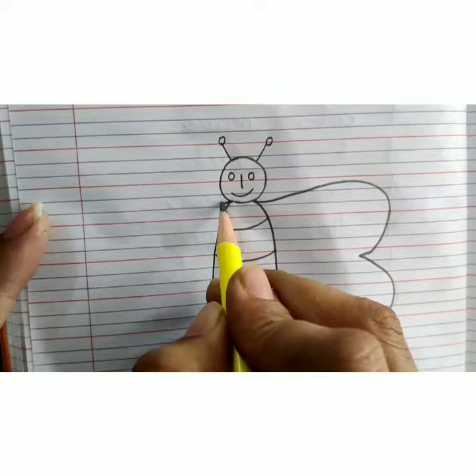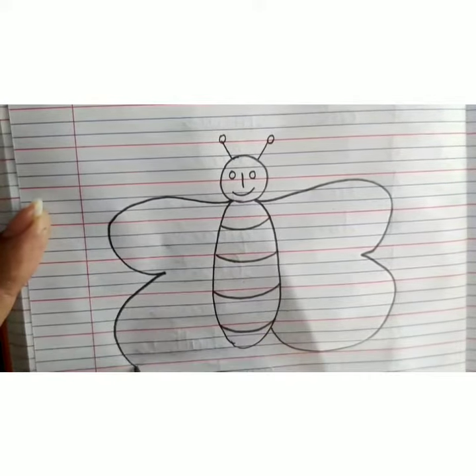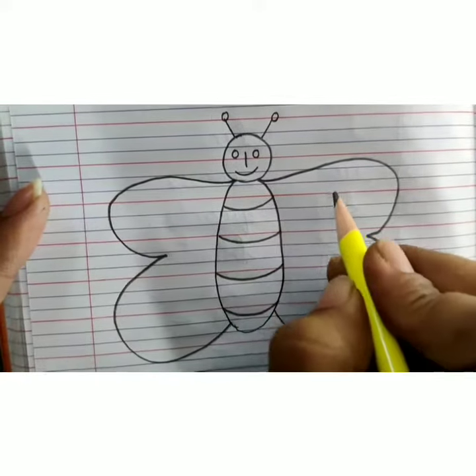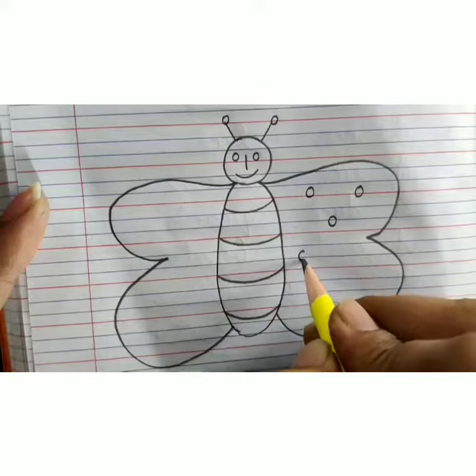Here again we will draw half circles on both sides. Now inside this we will draw small circles, this way.